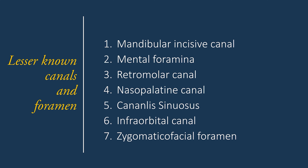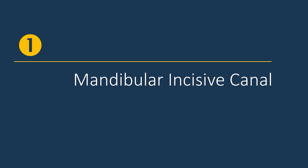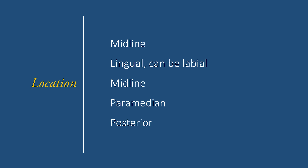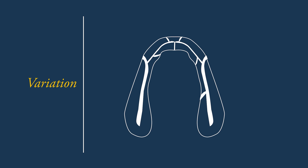I'll talk about seven anatomic variations: mandibular incisive canal, then mental foramina — and I'll show you examples of multiple foramina in the mental foramina region — then retromolar canal, nasopalatine canal, canalis sinusus, infraorbital canal, and zygomatic facial foramen.